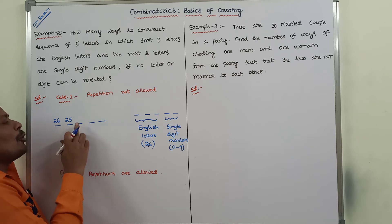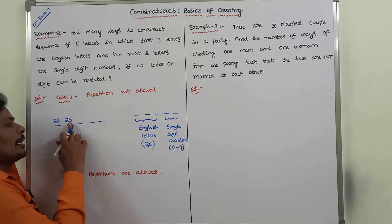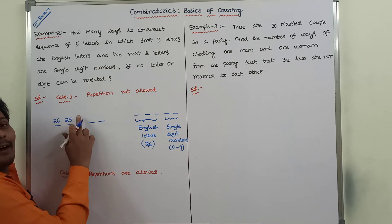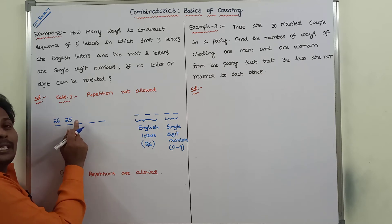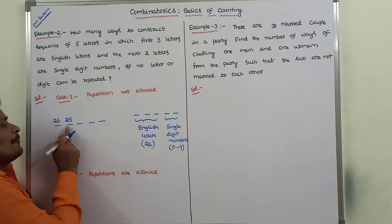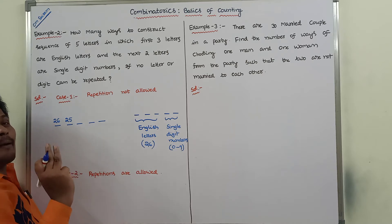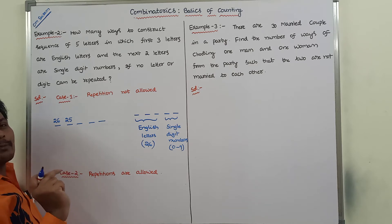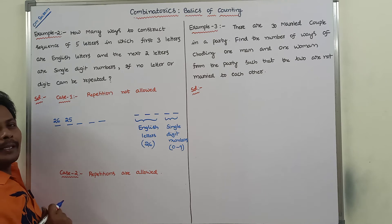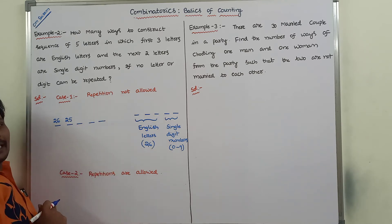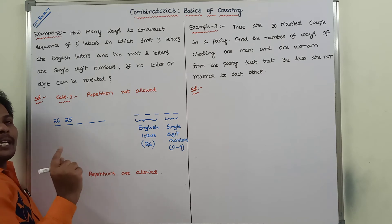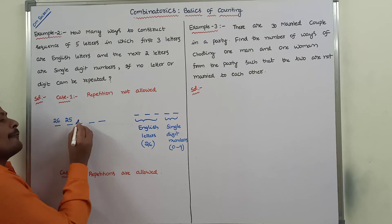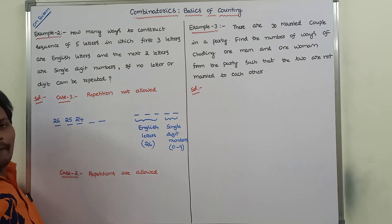For the third vacant place, we start with 26 letters. The first two vacant places already have two letters filled in, so the remaining letters are 26 minus 2, that is 24 letters, because there is no repetition of letters. For each letter there is one way, so 24 into 1 gives 24 ways for the third vacant place.